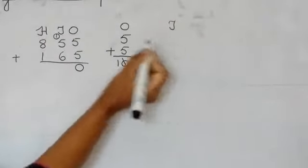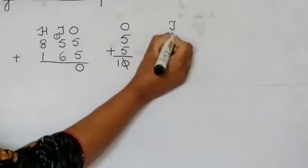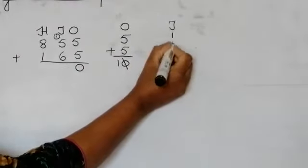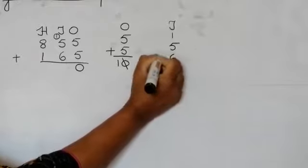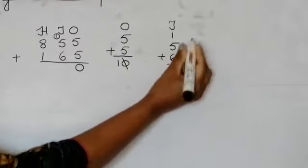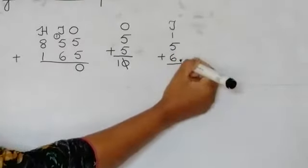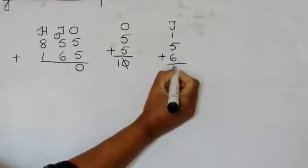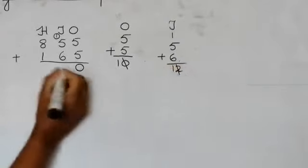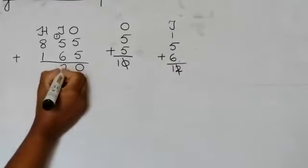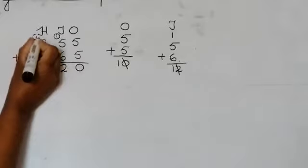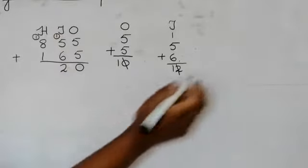Then we will separate our tens. 1 plus 5 plus 6. So 1 plus 5 is 6, 6 plus 6 is 12. Again we have a two-digit number. So we will put 2 here and we will carry 1 under hundreds.